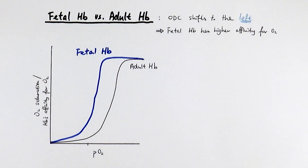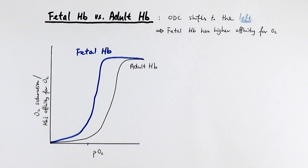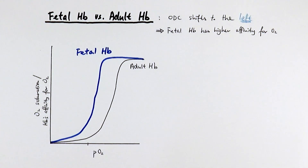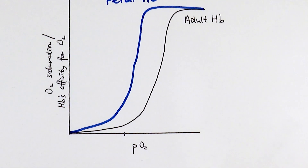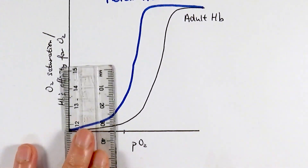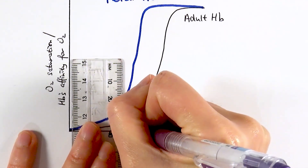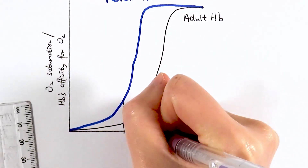Now we'll look at something slightly different: comparing fetal hemoglobin and adult hemoglobin. The black line represents the normal oxygen dissociation curve for adult hemoglobin. For fetal hemoglobin, the whole curve shifts to the left. Simply put, fetal hemoglobin has a higher affinity for oxygen. Looking at the graph at one particular partial pressure of oxygen and comparing two oxyhemoglobins starting with the same amount of oxygen, the adult hemoglobin would have a lower affinity for oxygen compared to the fetal hemoglobin.